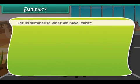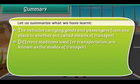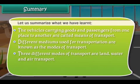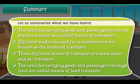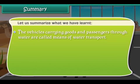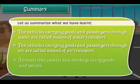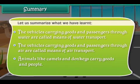Let us summarize what we have learned. The vehicles carrying goods and passengers from one place to another are called means of transport. Different mediums used for transportation are known as the modes of transport. Three different modes of transport are land, water and air transport. The vehicles carrying goods and passengers through land, water, and air are called means of land, water, and air transport respectively. Animals like camels and donkeys also carry goods and people.